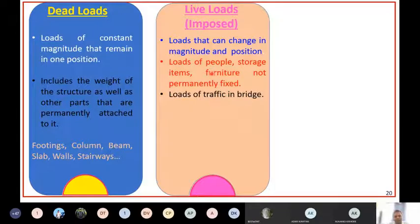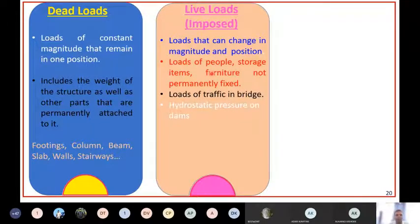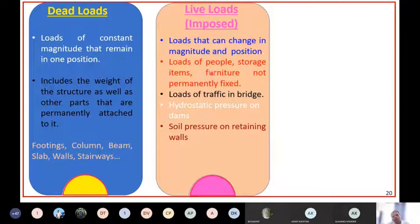In a bridge, the loads of traffic - cars running, so many vehicles - are all called live load. The bridge itself can be considered as dead load, but the vehicles moving on the bridge are live load. Hydrostatic pressure on dams is also a live load because the hydrostatic pressure is gamma times h, and h keeps varying depending on the level of water. Soil pressure on a retaining wall is also live load because wet soil has a different density from dry soil, and that soil pressure acts as a live load for retaining walls.